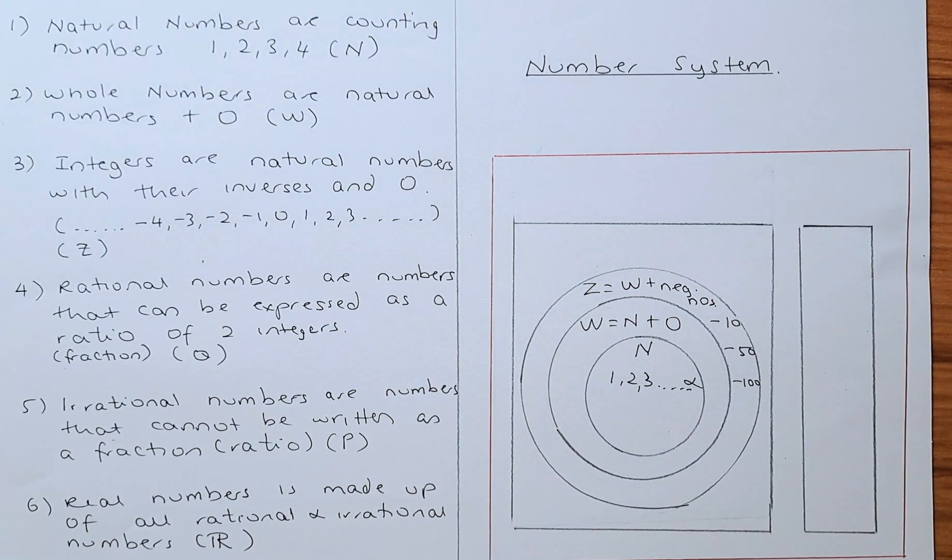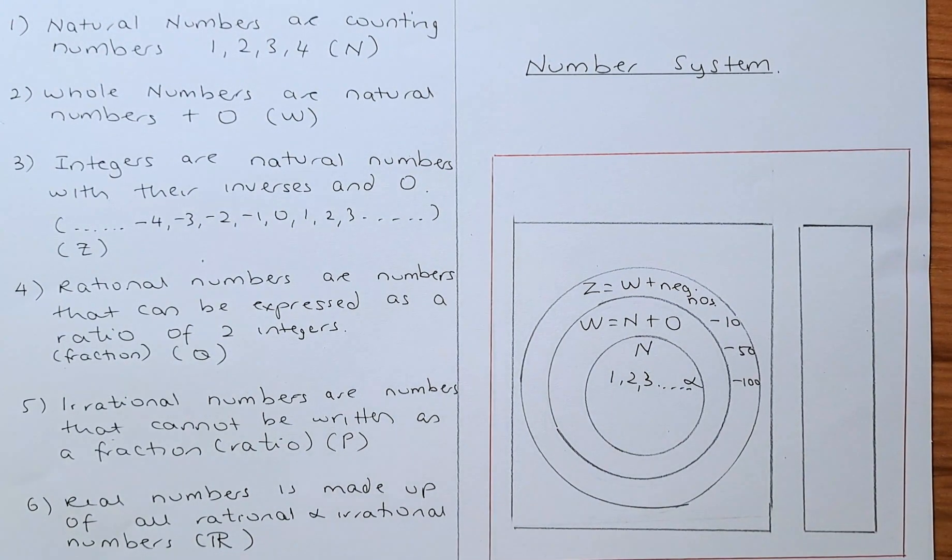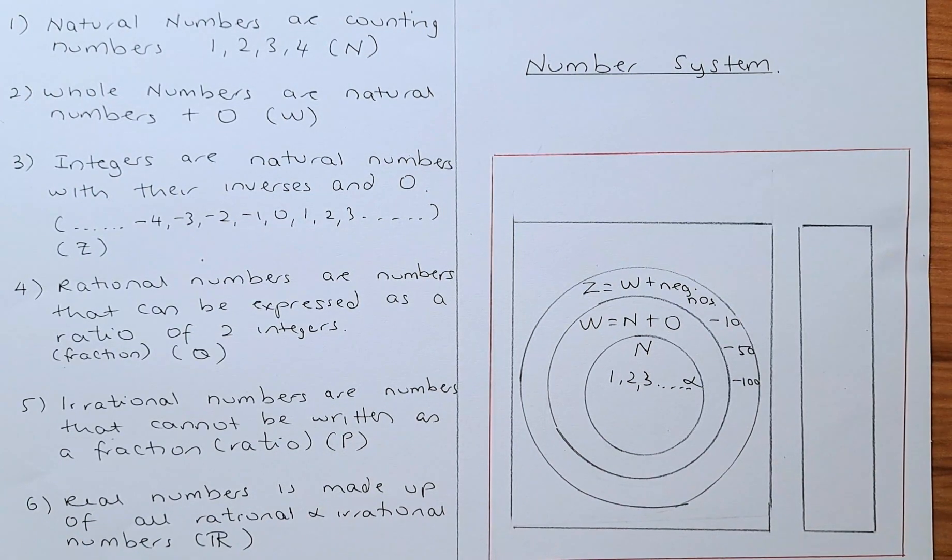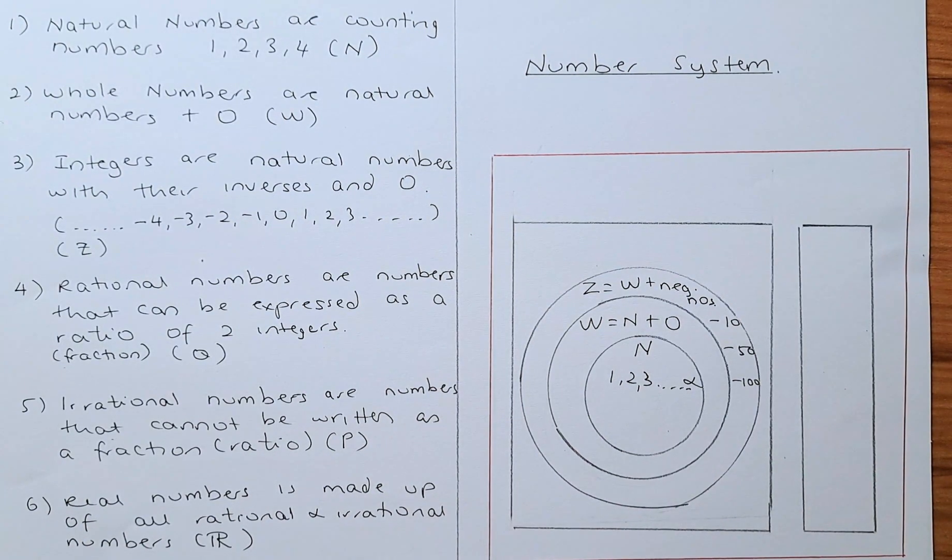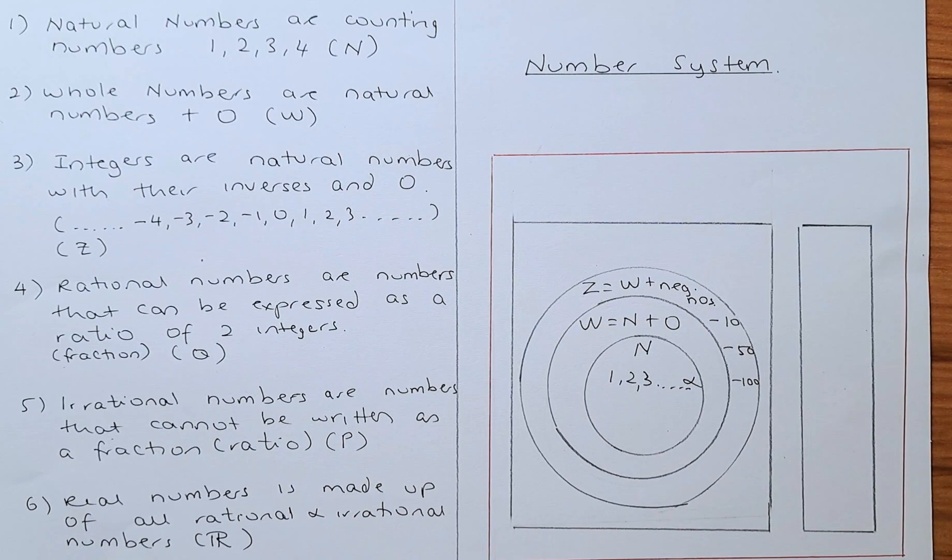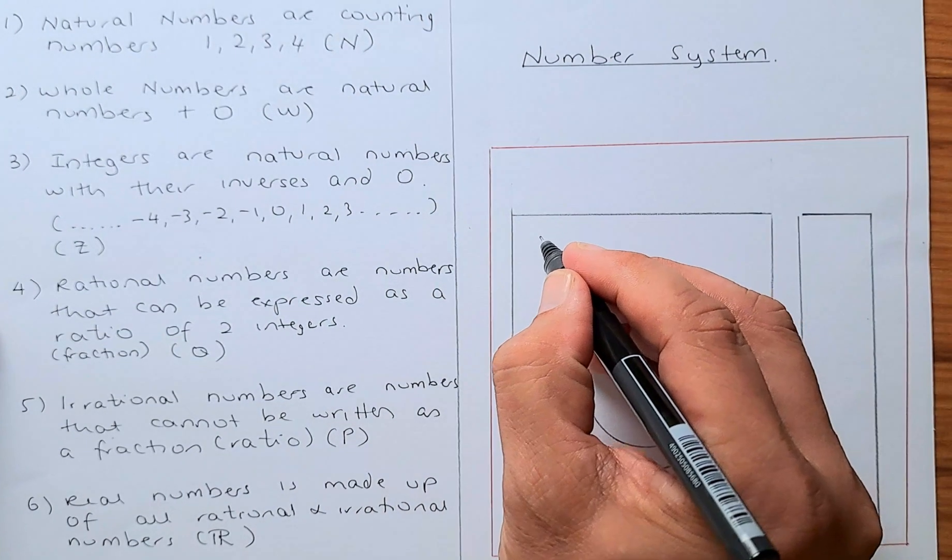So all integers are rational numbers because any integer can be divided by 1. For example, if you take 2 as an integer, 2 can be divided by 1.